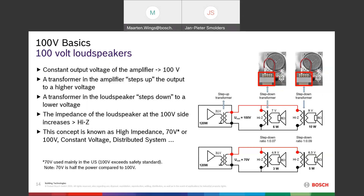70 volts is mainly used in the US, where 100 volts is considered unsafe. That is actually true — if you have a 100-volt system running at full power with an alarm signal on it and you touch the terminals of the amplifier or loudspeaker, you could experience problems with your heart rhythm. So be careful when working with 100-volt lines and do not touch the live terminals.